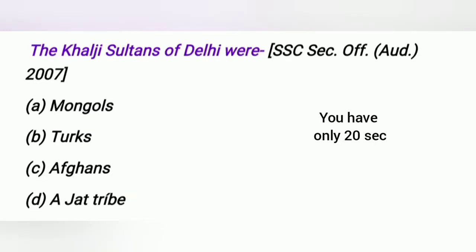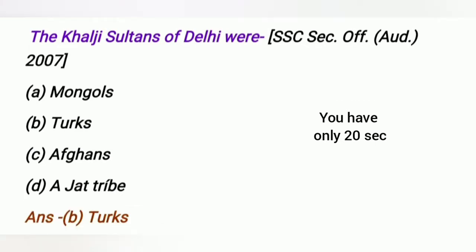The Khalji Sultans of Delhi were: A. Mongols, B. Turkish, C. Afghans, D. Egypt tribes. The answer is Turkish.